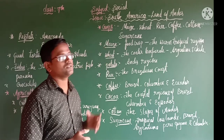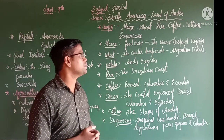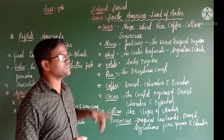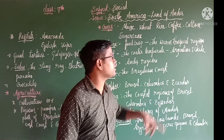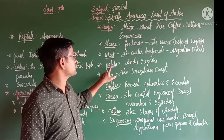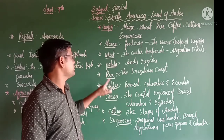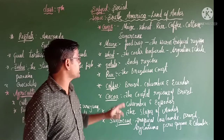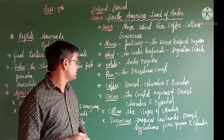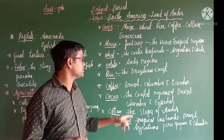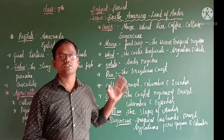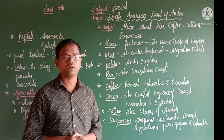Maize is considered a food crop grown in warm tropical regions. Wheat is grown in cooler temperate regions like Argentina and Chile, and is exported from Argentina. Potato is grown in the Andes region. Rice is grown along the Brazilian coast. Among non-food crops, coffee is famous in Brazil, Colombia, and Ecuador — Brazil is the world's largest producer of coffee.